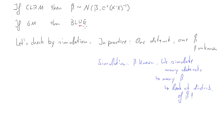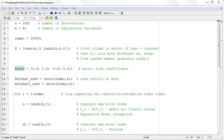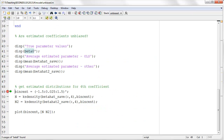Let's check whether our OLS estimators are indeed unbiased — that's the first thing we're going to check. What would we expect? If our OLS estimator is unbiased, the average of all 10,000 versions of beta hat should be equal to the true beta. Each individual estimate will be different, but on average we should get it right. That's what unbiasedness means.